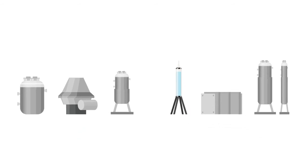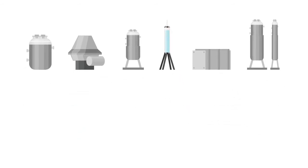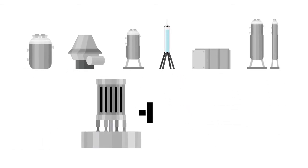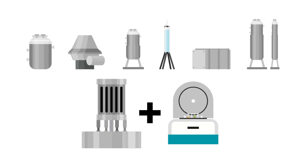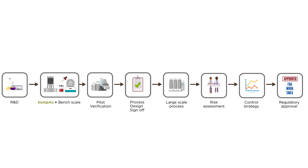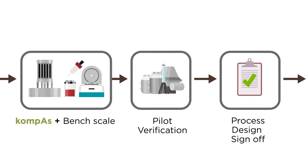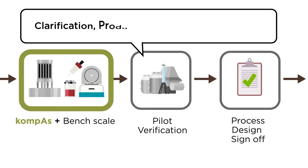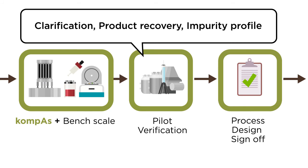An illustration of this approach is the ultra-scale-down centrifugation method where Compass and a typical bench centrifuge are used to generate insights for industrial operation. At the early stages of process development, data obtained from such experiments can be used to evaluate different operating conditions and map centrifugation performance including clarification, product recovery and impurity profile.